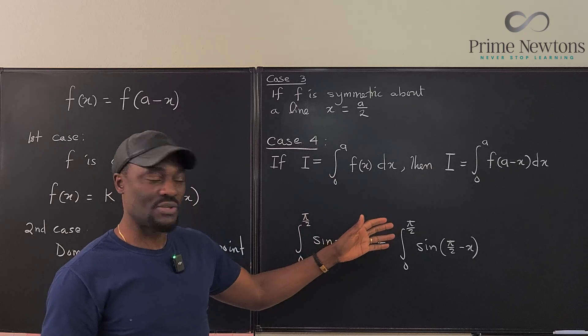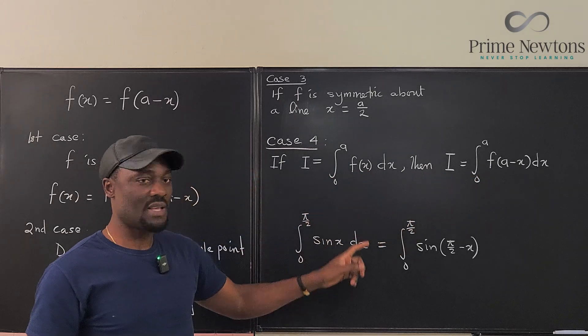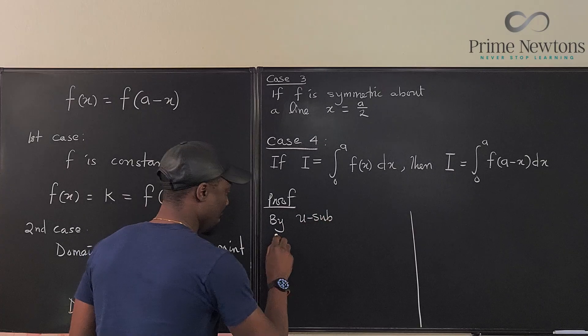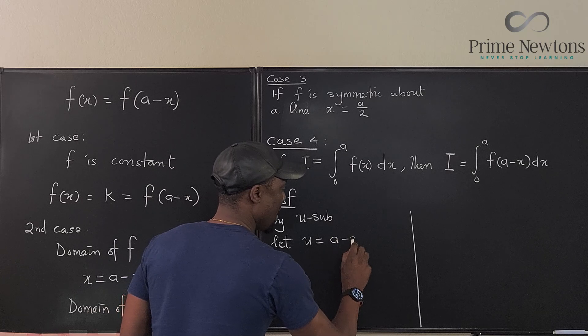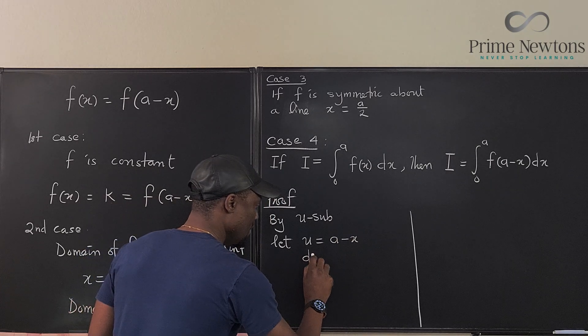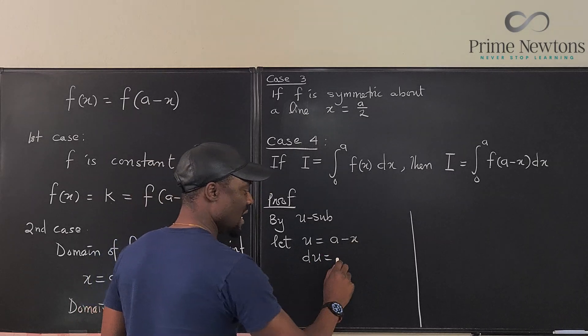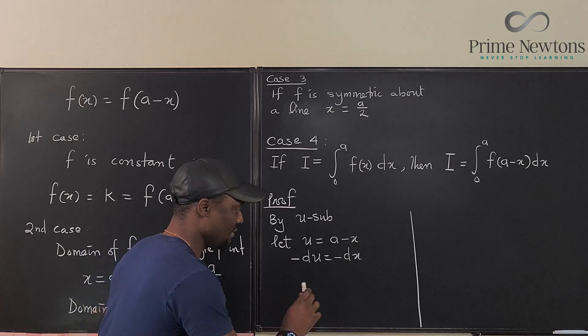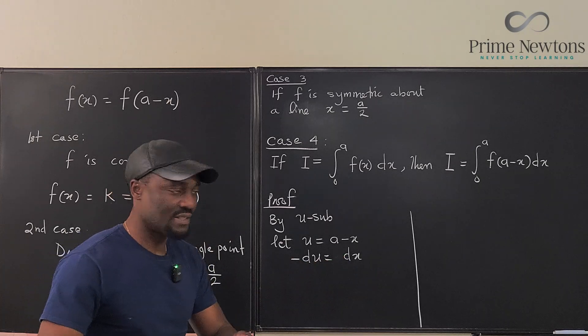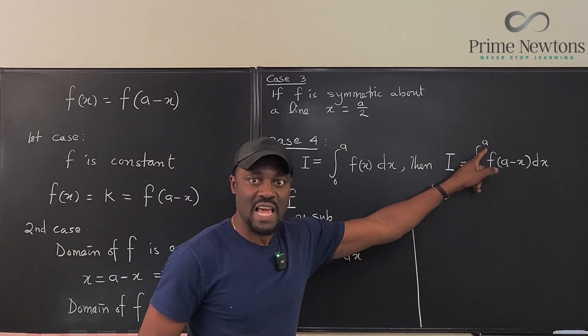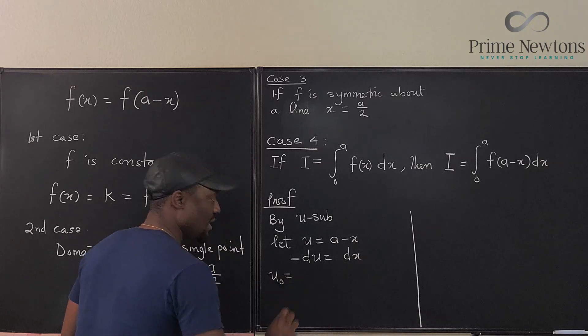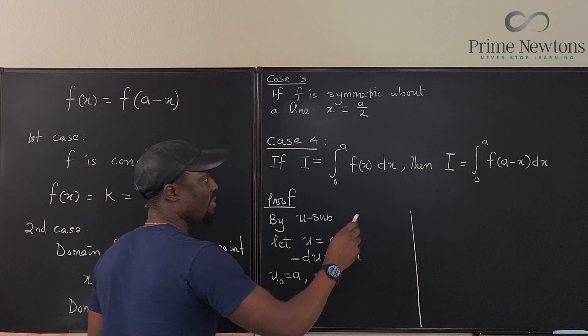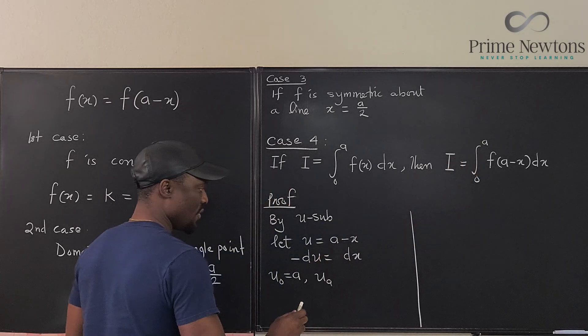Because just by the fundamental theorem of calculus, we know that this is the same thing as this for any function. By u substitution, let u be equal to a minus x. We know that du is going to be the derivative of this with respect to x. It's going to be negative dx. Just to make life easy, let's bring the negative here and this becomes positive. So we say negative du is dx. Now we need to evaluate u at zero and at a. u evaluated at zero is going to be a minus zero, that's a. And u evaluated at a, the upper boundary, is going to be a minus a, which is going to be zero.